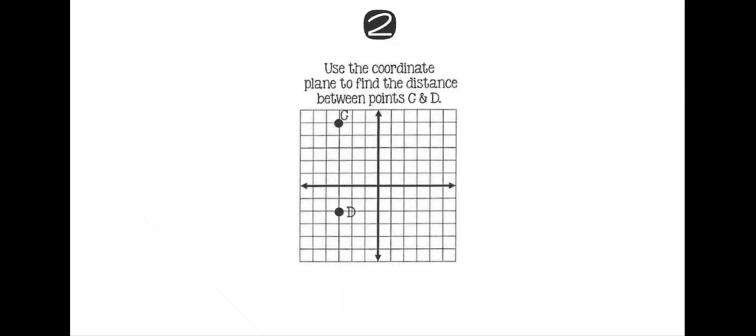Okay. Sometimes they can be asking you the vertical distance. So how far away is C from D? Well, let's do our same thing and count. It's one, two, three, four, five, six, seven units away. So how far away is C from D? It is seven units and that's it. That's all it's asking.